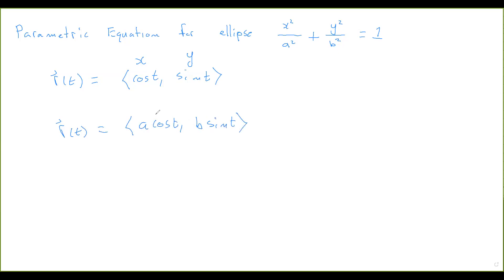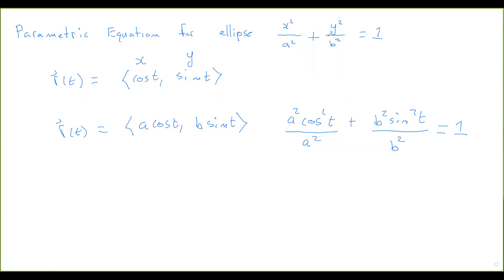Notice that if you do the x-coordinate squared plus the y-coordinate squared, you get a-squared cosine-squared t plus b-squared sine-squared t. The defining equation for the ellipse says to divide the x-part by a-squared and the y-part by b-squared, and we see that this equals 1. I think you've seen this before in calc 1 or calc 2; we started with what we knew and made these adjustments.